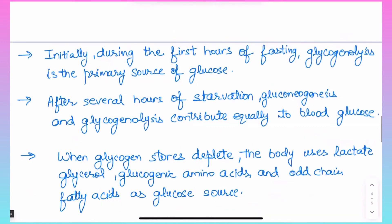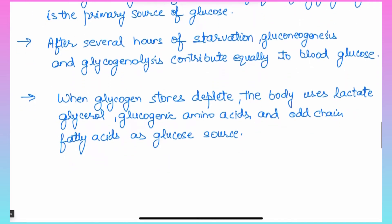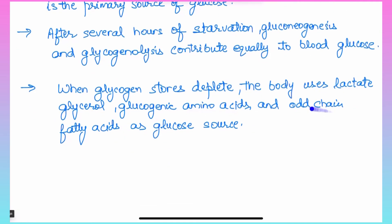Initially, during the first few hours of fasting, glycogenolysis is the primary source of glucose, but after several hours of starvation, gluconeogenesis and glycogenolysis contribute equally. When glycogen stores deplete, the body uses lactate, glycerol, glucogenic amino acids, and odd-chain fatty acids. Only about 190 g of glycogen can be stored, while daily glucose requirements are around 150 g. Estimates show 54% of glucose comes from gluconeogenesis after 14 hours, rising to 64% after 22 hours and 84% after 42 hours of starvation.